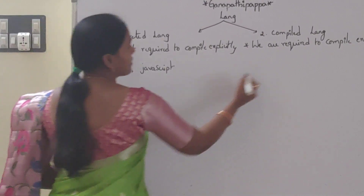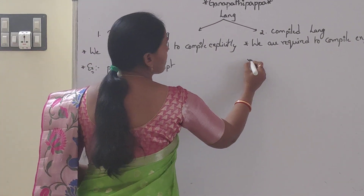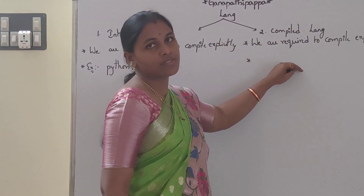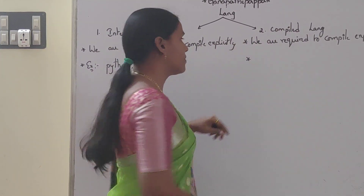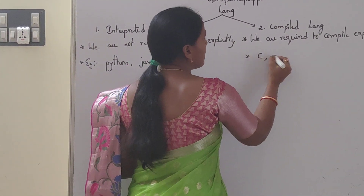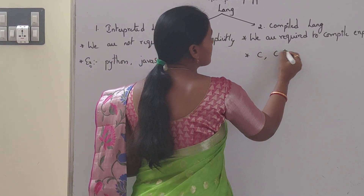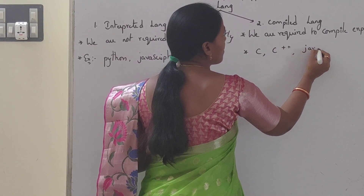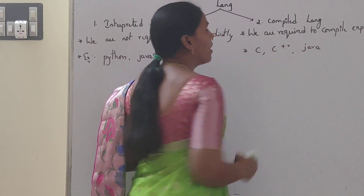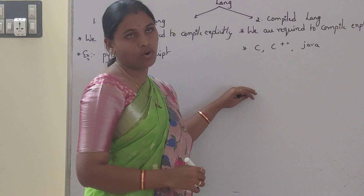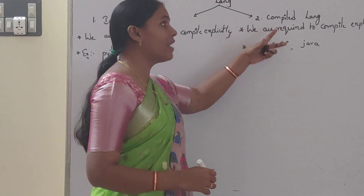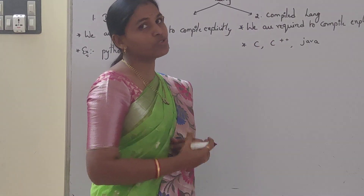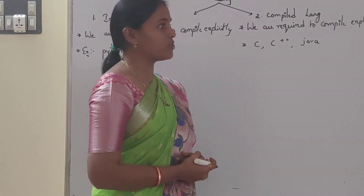Next, compiled languages. Examples: C, C++, and Java. These three languages are compiled languages as well as interpreted languages.